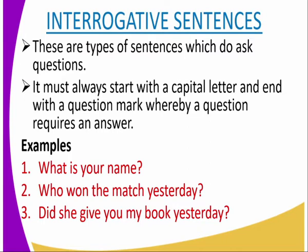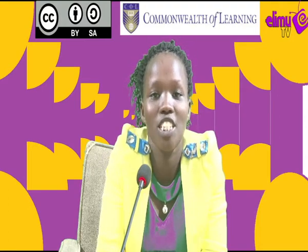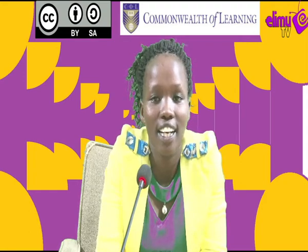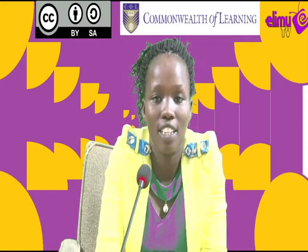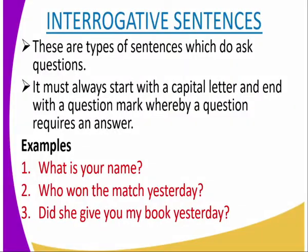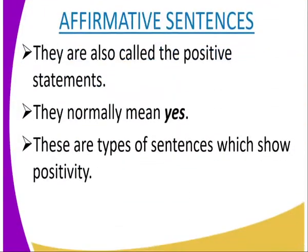Interrogative sentences are types of sentences which ask questions. They start with a capital letter and require an answer. If you ask a question, you expect an answer in return. Examples include: 'What is your name?', 'Where do you live?', 'Which is your house?', 'Who won the match yesterday?', and 'Did she give you my book yesterday?' These end with a question mark to show they are interrogative sentences.